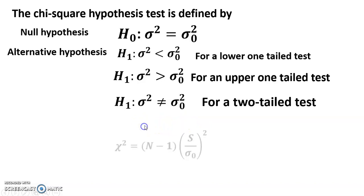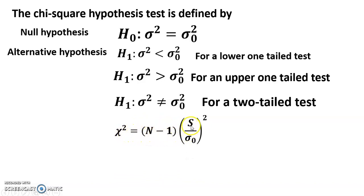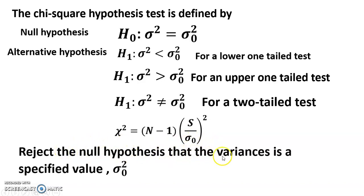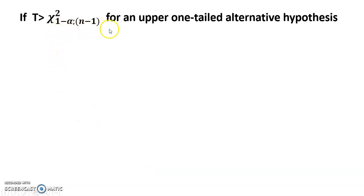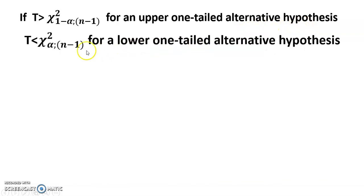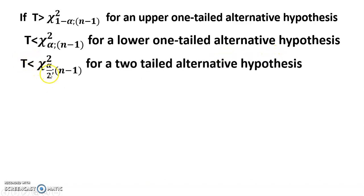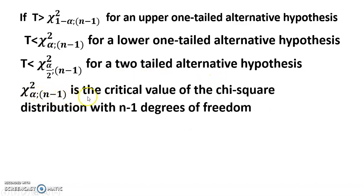The chi-square test statistic is: chi square equals (n minus 1) times s square divided by sigma zero square. Reject the null hypothesis when: t greater than chi square (1 minus alpha, n minus 1) for an upper one-tail alternative; t less than chi square (alpha, n minus 1) for a lower one-tail alternative; and t less than chi square (alpha over 2, n minus 1) for a two-tailed alternative. Here, chi square (alpha, n minus 1) is the critical value of the chi-square distribution with n minus one degrees of freedom.